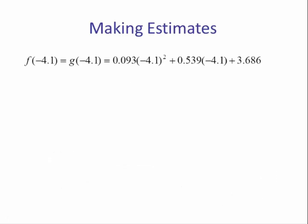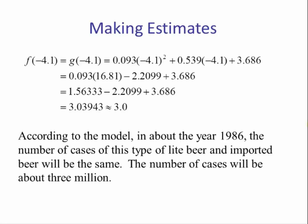So next, if we take the year and plug it back into the model, for t equals negative 4.1, we want to find what is f(−4.1) or what is g(−4.1). These will be the same answer. Following the order of operations—square first, multiply, subtract, then add—we see for the year negative 4.1, the number of cases of beer is approximately three million. So we would say, according to the model, in about the year 1986, the number of cases of this type of light beer and imported beer will be the same. The number of cases will be about three million.